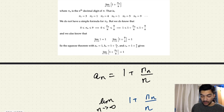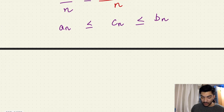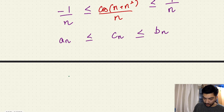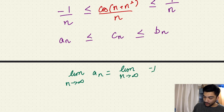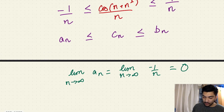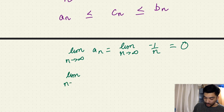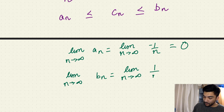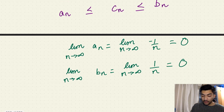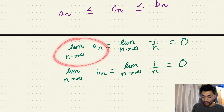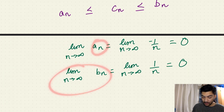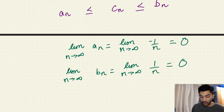Now we have to calculate the limit as n tends to infinity for a(n) and b(n), and they're easy to calculate. The limit as n tends to infinity for a(n) is basically the limit as n tends to infinity of minus one over n, and we know this expression will approach zero. So this is zero. Similarly, the limit as n tends to infinity for b(n) is the limit of one over n, and this is also equal to zero. So our second condition holds true — the limit of both bounding sequences is equal to zero.